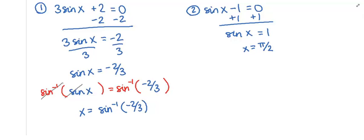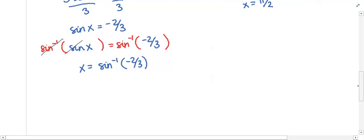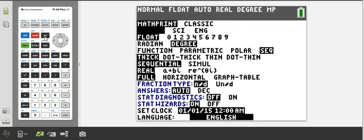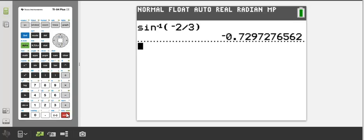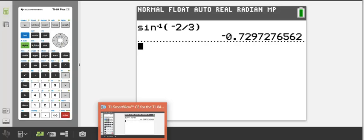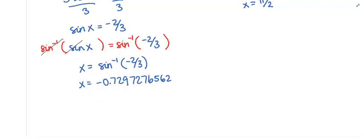When plugging into the calculator, does it matter whether we're in degrees or radians? Since we're working this problem in radians, we need a radian angle output, so we need to be in radian mode. I'm currently in degrees, so I need to switch over to radians. The calculator gives sin⁻¹(−2/3) ≈ −0.7297276562 radians. This is weird — we're so used to degrees that this can be bothersome and hard to interpret.